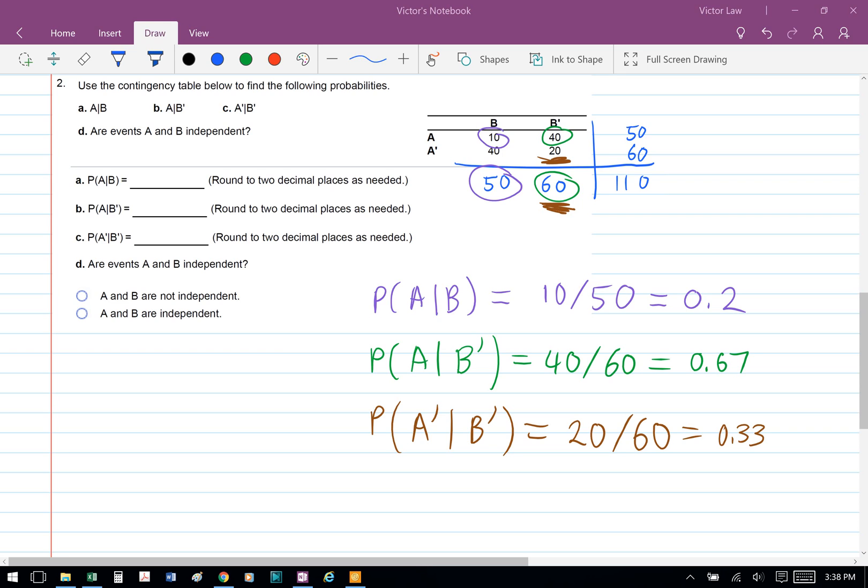For part B, we're looking for the probability of A conditioned on B'. Now we're only looking at column B', and we have 40 divided by 60 as the probability of A given B', which equals 0.67.